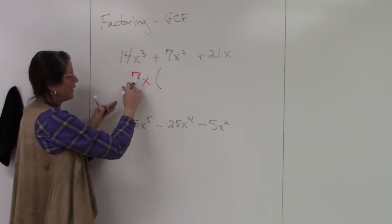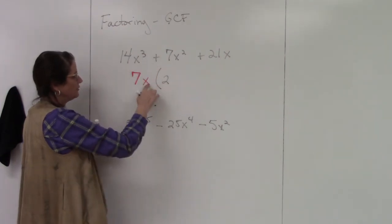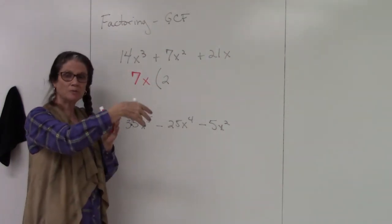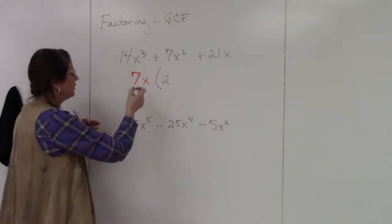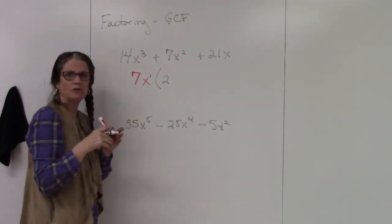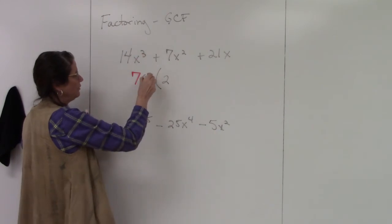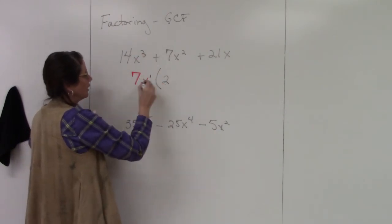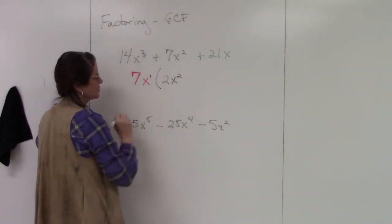So 14 divided by 7 is 2, x³ divided by x to the first. So this goes back to our exponent rules. So this is, we're dividing, so this is the quotient rule. So I'm going to subtract 3 minus 1. So remember when there's no exponent there, it's an assumed one. So 3 minus 1 is 2.